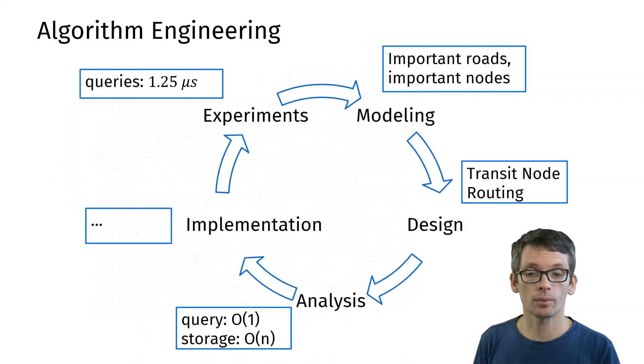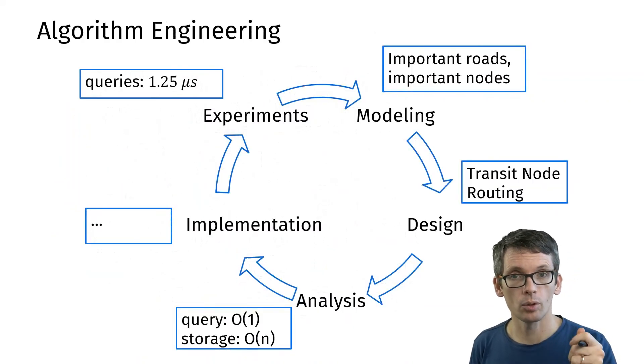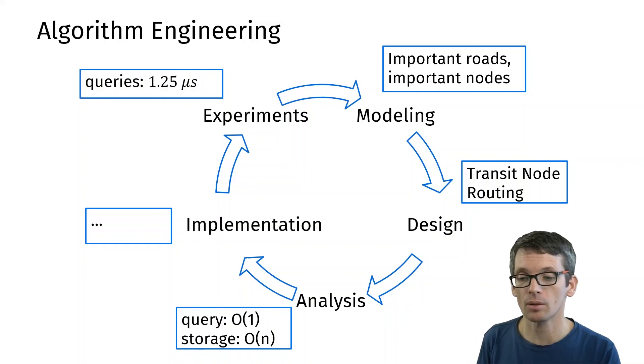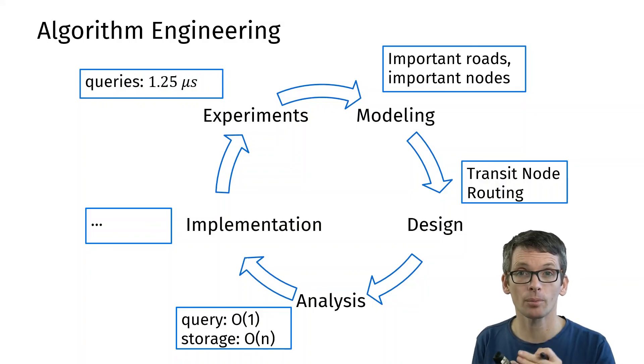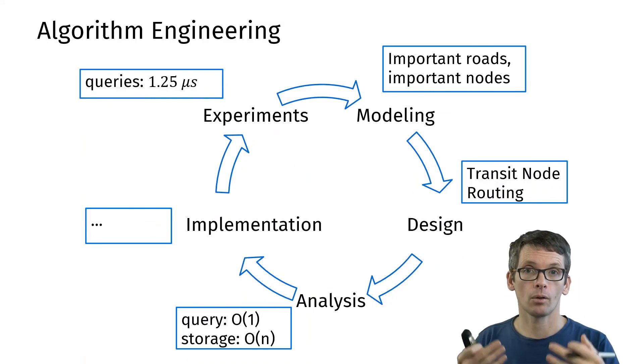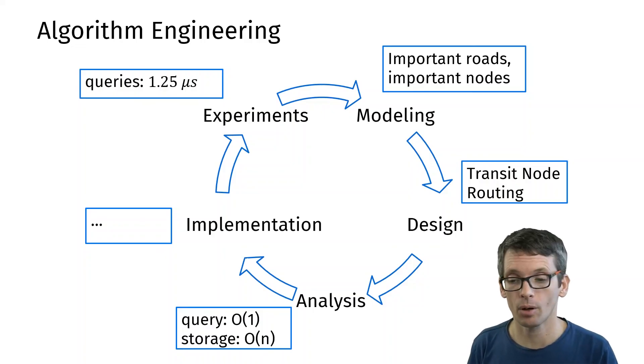Back to our algorithm design cycle. We used important roads, we used important nodes that led us to transit node routing. In terms of the theoretical analysis it performs well. I didn't talk that much about implementation, but in terms of experiments, or the practical performance, this is now a very fast algorithm.